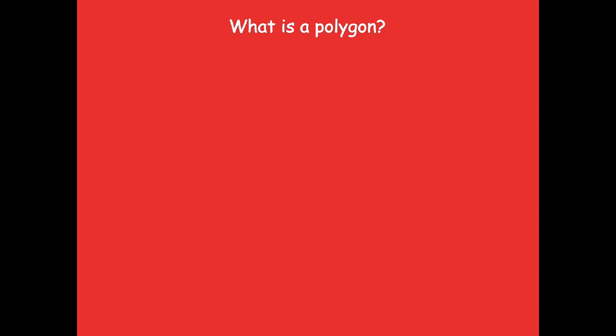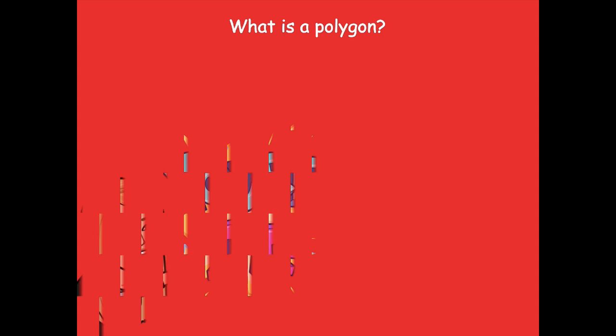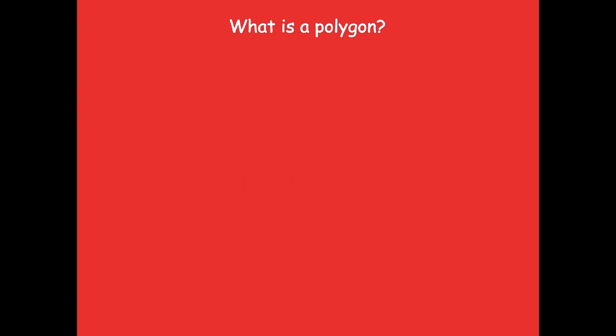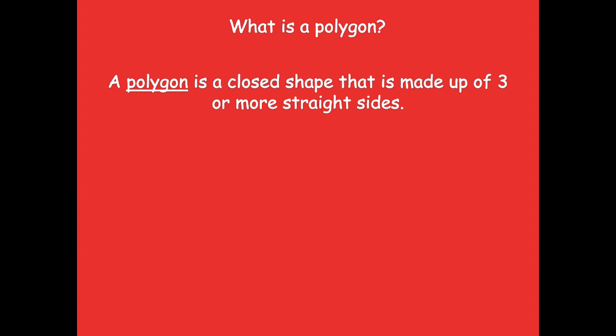So what is a polygon? I want you to pause the video and think about that for a minute. A polygon is a closed shape that is made up of three or more straight sides.